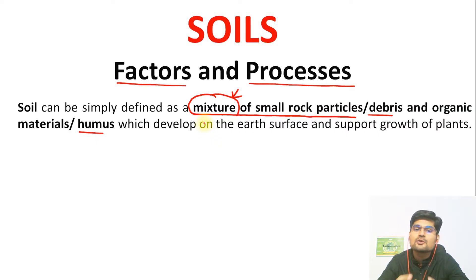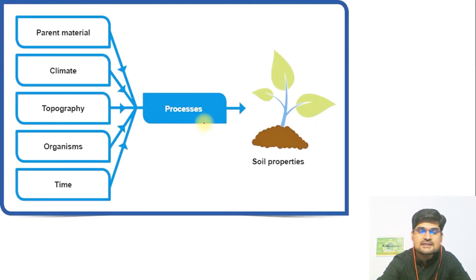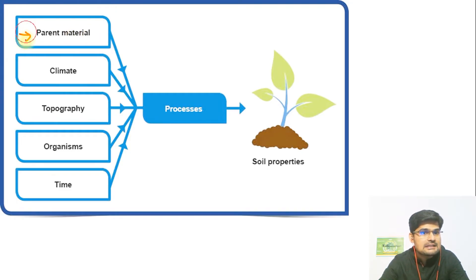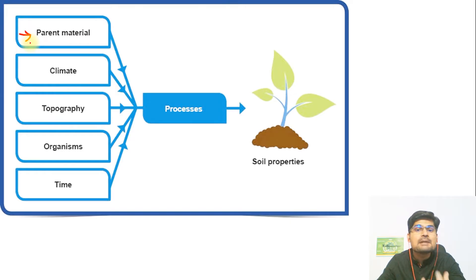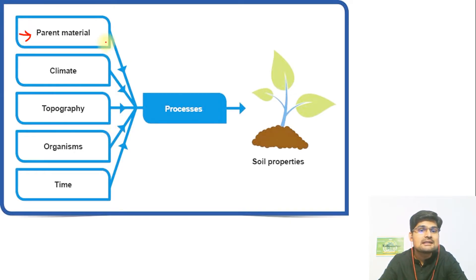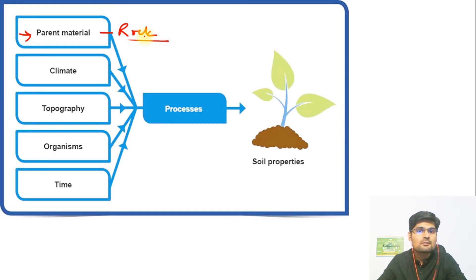Now let's go to the factors of formation of soil. Looking at this flow diagram, you can see the first factor is the parent material. For the genesis of soil, the parent material is important, and when we say parent material, it is signifying the rock types. Remember sedimentary rock, igneous rock, metamorphic rock — those are the important parent materials for soil formation.